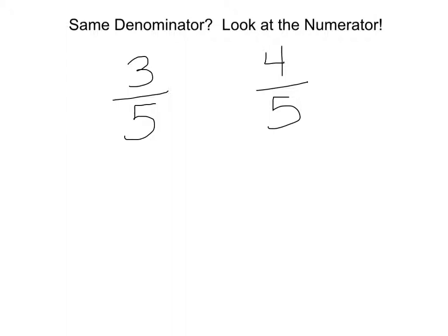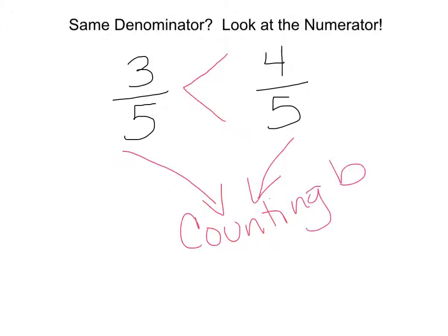Well if you imagine a pie, which would be more pie? Three out of the five slices of pie that are in there, or four out of the five slices of pie? Because all those pieces are the same size, one fifth, it's going to be four fifths that's greater. Because, in both cases, we're counting by the same increments. A fifth is a fifth is a fifth.